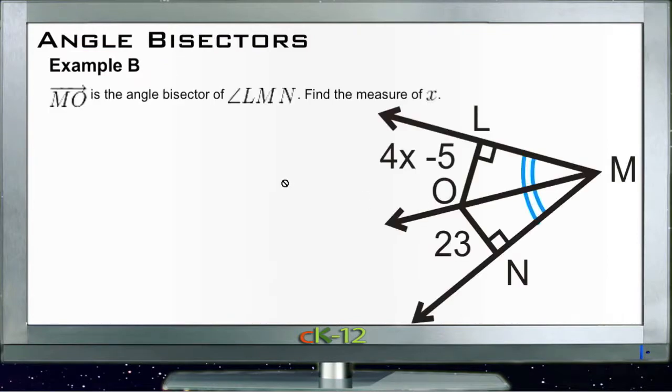Let's take a look at Example B. Example B says ray MO is the angle bisector of angle LMN. That tells us that these two angles here are the same, and we need to find the measure of x. Since this is the angle bisector, that tells us that this line here is